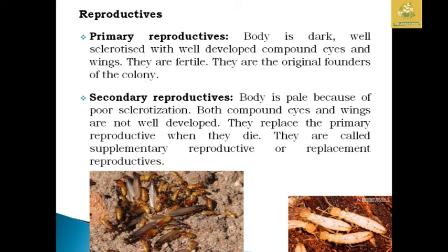While seeing the reproductives: primary reproductives have a dark, well-sclerotized body with well-developed compound eyes and wings. They are fertile and are the original founders of the colony. Secondary reproductives have a pale body due to poor sclerotization, and both compound eyes and wings are not well developed. They replace primary reproductives when they die and are called supplementary or replacement reproductives.